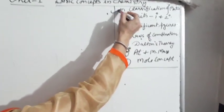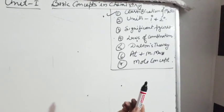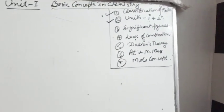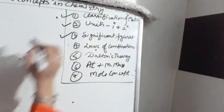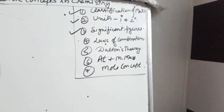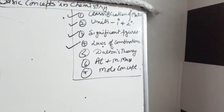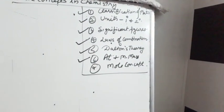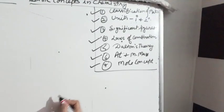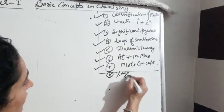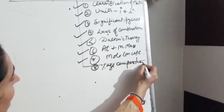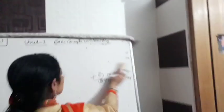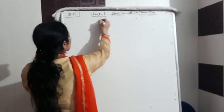We will talk about classification of matter. It will revise your ninth class chapters. Then we will talk about units, how to define the units and use the units. Then we will talk about significant and non-significant figures, then various laws of combination. Then Dalton's theory, concept of atomic and molecular mass, and then we will talk about mole concept and last we will talk about percentage composition and numericals.